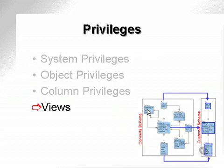Views can be used to do more or less the same thing that object privileges and column privileges can be used for, not quite in the same way. A view can be used to pick out certain columns within a table, and then that view can be used by the same user, or access can be granted to a different user. So a view would be more or less a combination of object and column privileges.